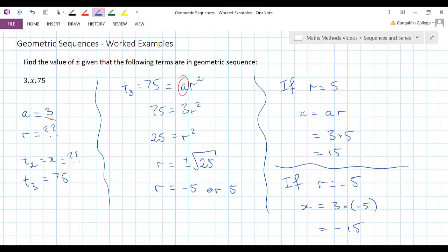So either way, x is going to have a magnitude of 15, but it could be positive or it could be negative, and these would still be in geometric sequence.